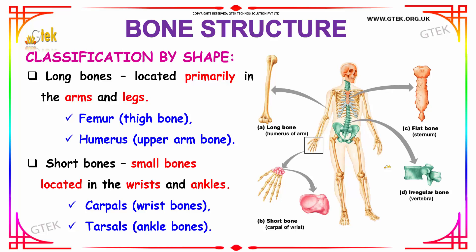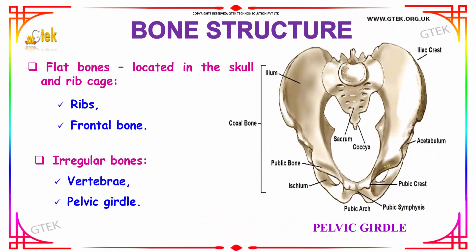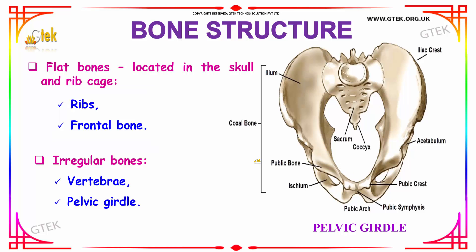Flat bones are flat in structure and located in the skull and ribcage. The frontal bone of the skull is a flat bone, as well as the sternum in the rib. Irregular bones are found in the vertebrae and pelvic girdle — they do not have a defined shape.